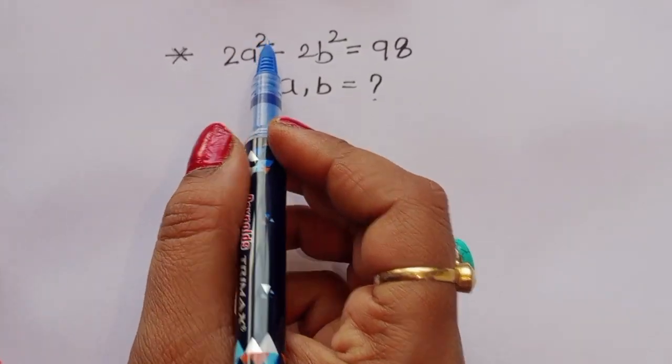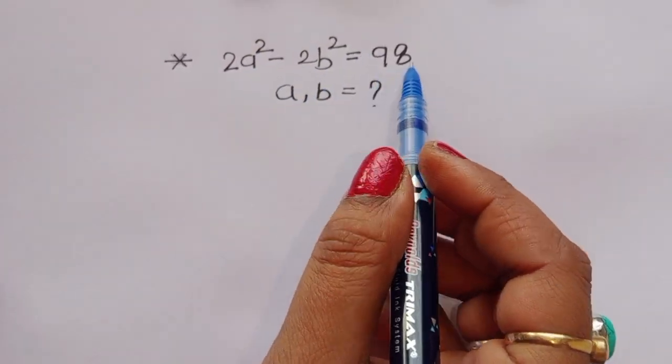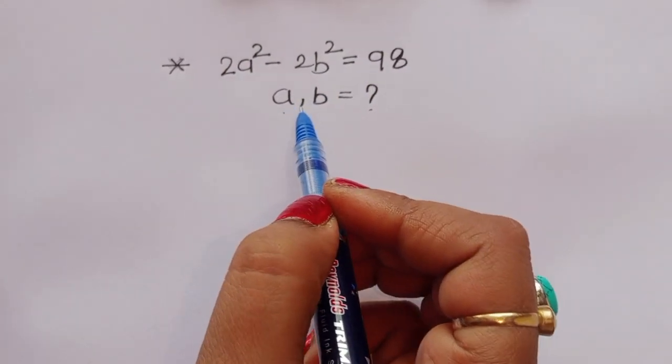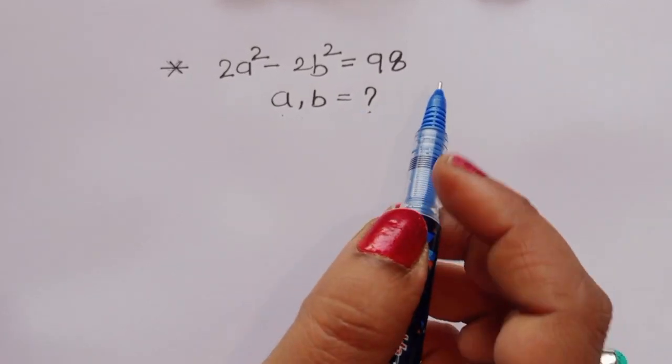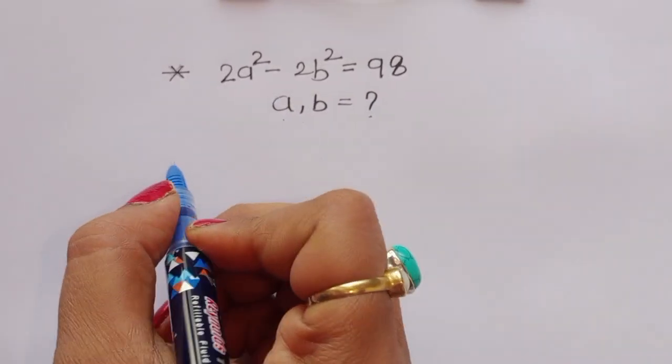The question is: given 2a² minus 2b² is equal to 98, we have to find out the value of a and b. Let's see the solution.